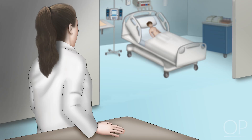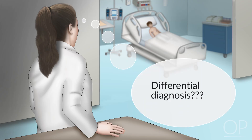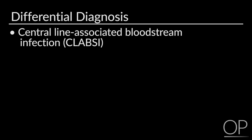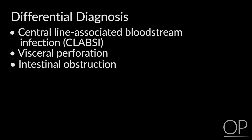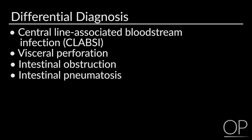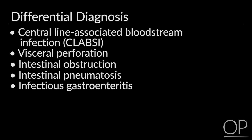On the way to the patient's room, you think about your differential diagnosis, which should include the following: central line-associated bloodstream infection, visceral perforation, intestinal obstruction, intestinal pneumatosis, infectious gastroenteritis, a viral syndrome, or pneumonia.